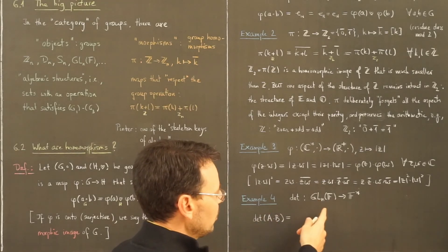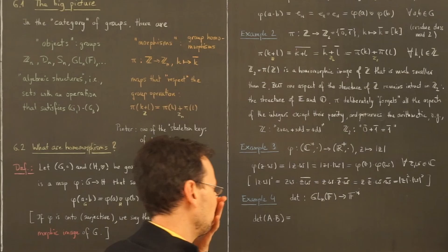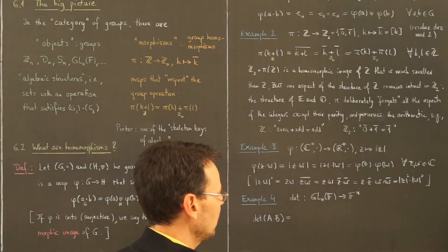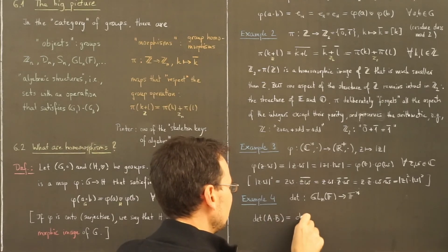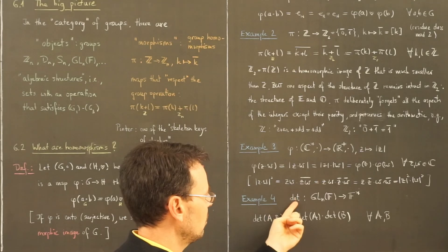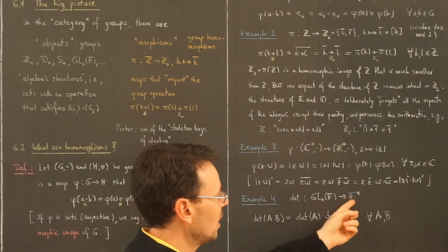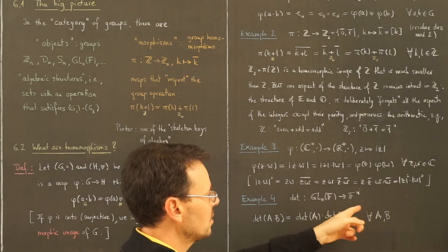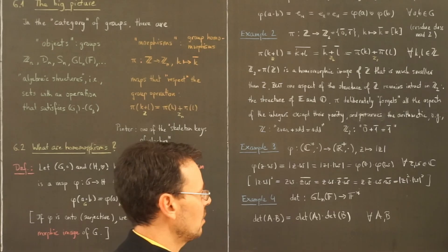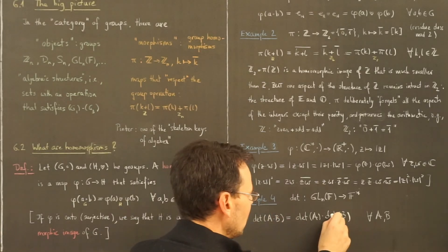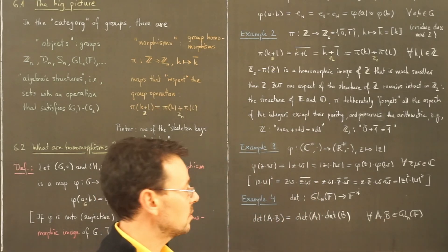If you do not have a background in linear algebra, ignore the matrix examples — you can still learn the key concepts of group theory without them. But if you know linear algebra, then you know the determinant is multiplicative, and this means nothing else than that the determinant is a group homomorphism from the group of invertible n×n matrices over a field F (with matrix multiplication) to the group of non-zero elements of F (with multiplication). This well-known multiplicative property of the determinant is another example of a homomorphism.